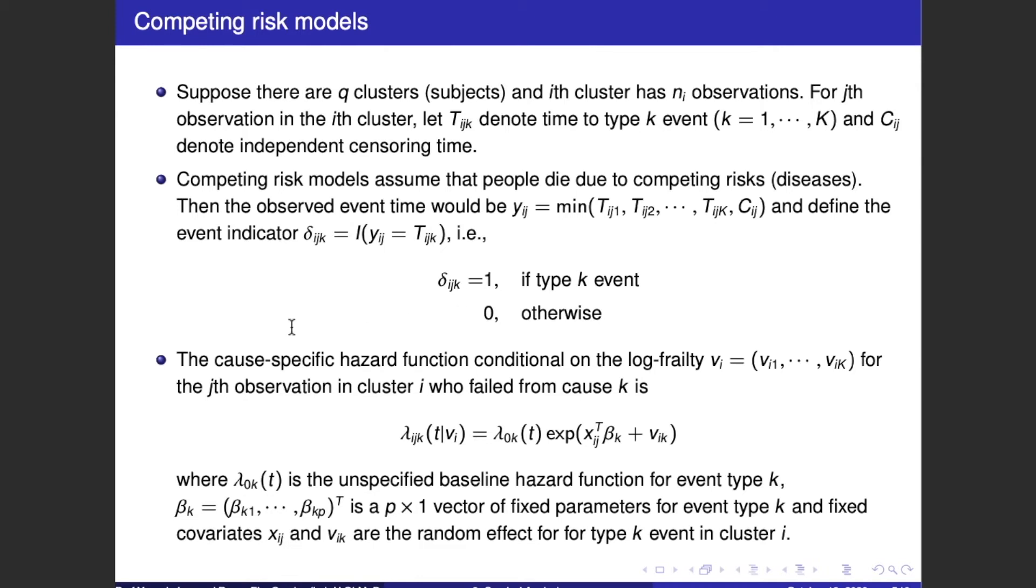The cause-specific hazard function conditional on the log frailty V_i equals (V_i1, ..., V_iK) for the jth observation in cluster i who failed from cause k is lambda_igk(t | V_i) equals lambda_0k(t) times exp(x_ig transpose beta_k plus V_ik).